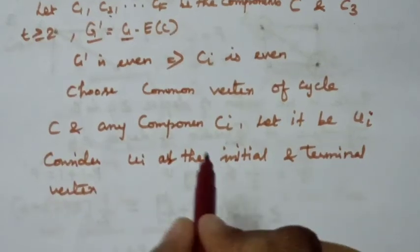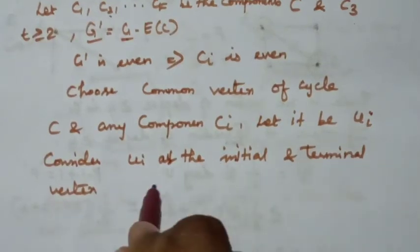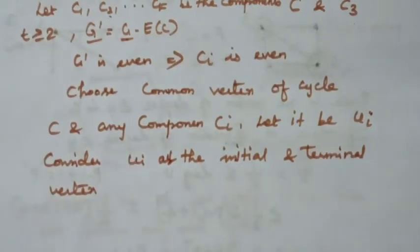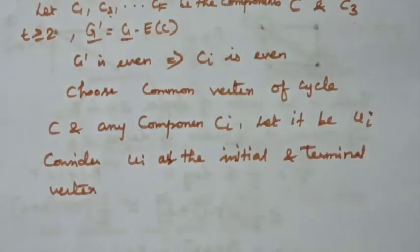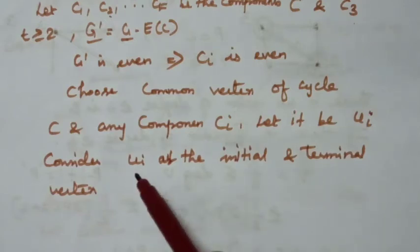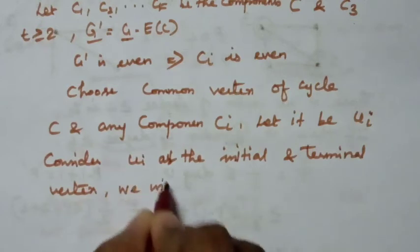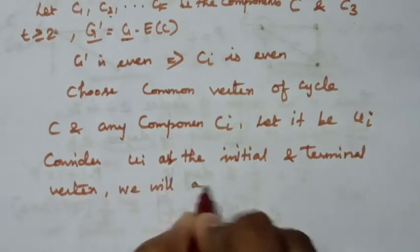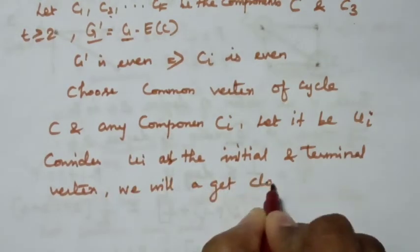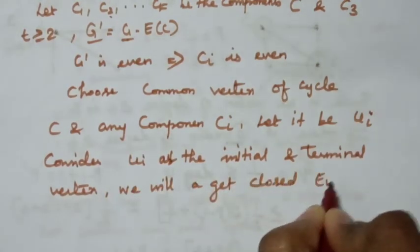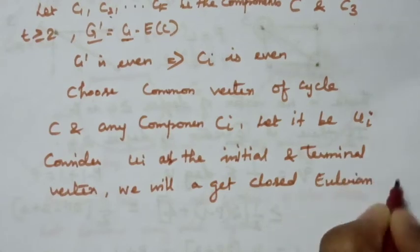With UI as the initial and terminal vertex, you can find a closed Eulerian trail on that component, as already explained in the diagram. You will get a closed Eulerian trail. This process is repeated for each component.